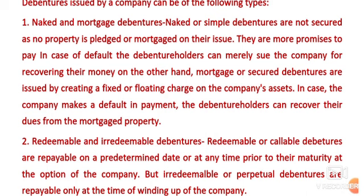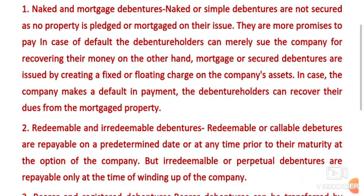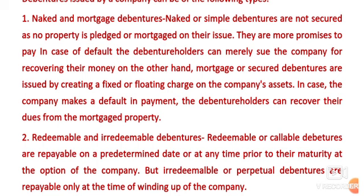On the other hand, mortgage or secured debentures are issued by creating a fixed or floating charge on the company's assets — either a fixed charge or a floating charge that keeps changing. In case the company makes a default in payment, the debenture holders can recover their dues from the mortgaged property. The company sells that asset taken as security and repays the amount.